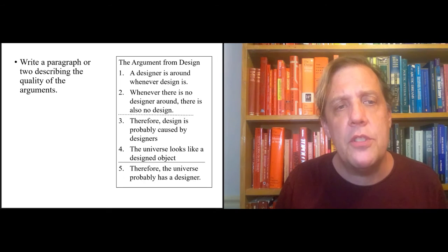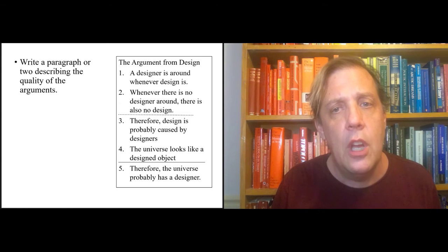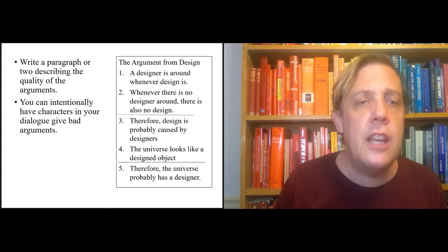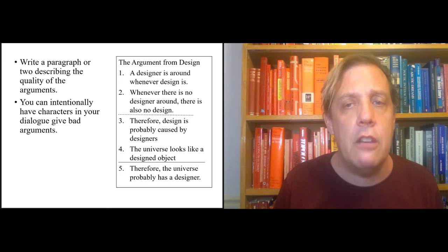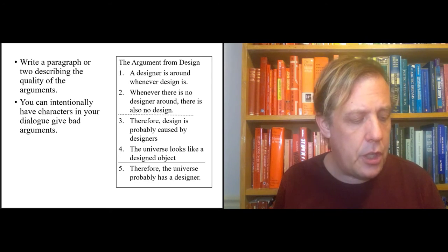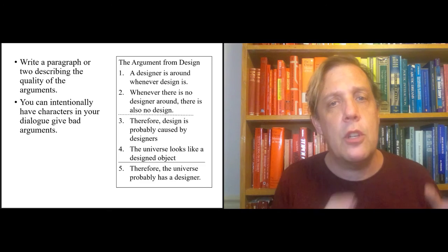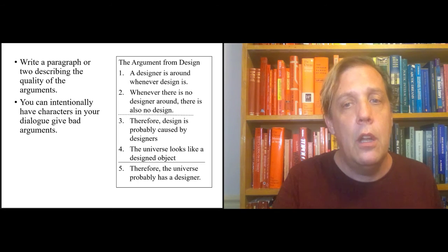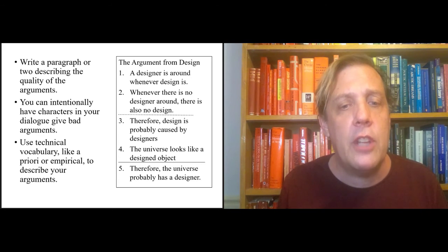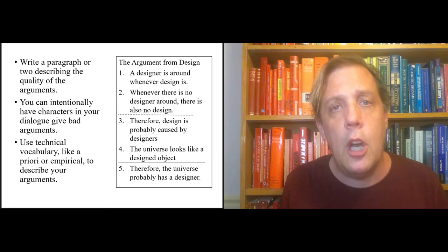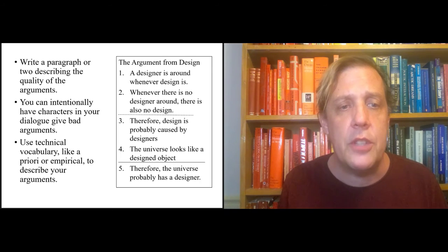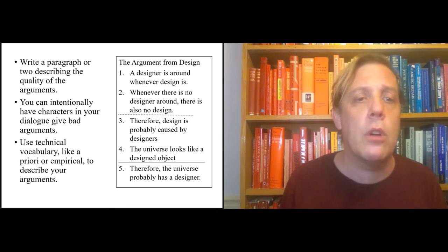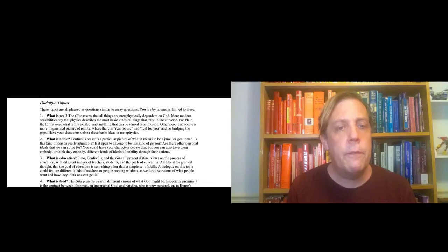In addition to writing your argument in standard form, you should write a paragraph or two describing the quality of your arguments. For instance, you can intentionally have characters in your dialogue give bad arguments. This is something that Plato does all the time. In fact, the full version of Phaedo has a sequence of arguments of increasing quality for the claim that the human soul is immortal. And you're going to want to use some of the technical vocabulary we have introduced in this course to describe the arguments your characters give. For instance, are they a priori or empirical?